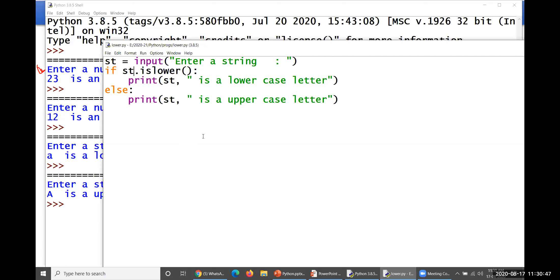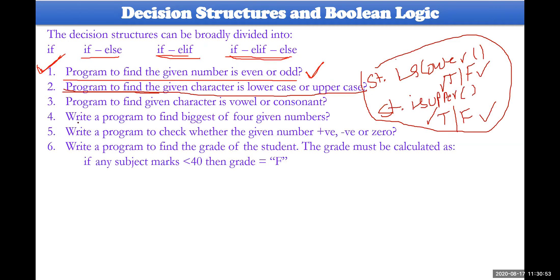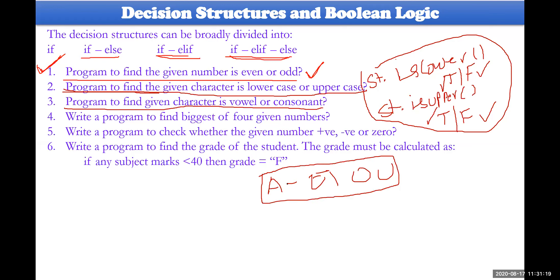I will send all these materials through Google Classroom. The next program is to identify whether you have entered a vowel or consonant. Vowels are a, e, i, o, u. Other than these five characters, out of 26 characters, whatever character you have entered would be called a consonant.